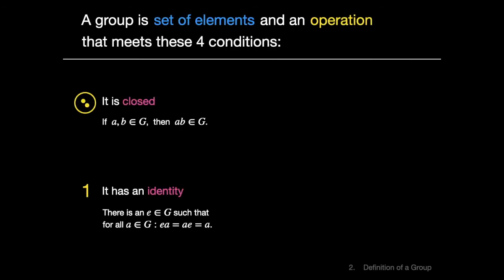This is our third necessary condition to be a group. Every element of the group has an inverse. That is, for every element A in the group G, there is an element B in G, such that AB equals the identity E.